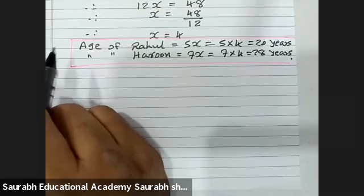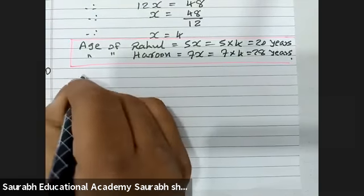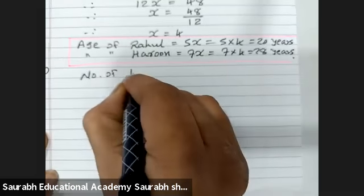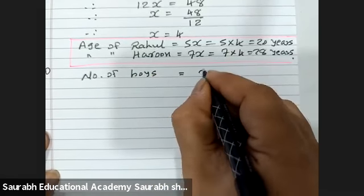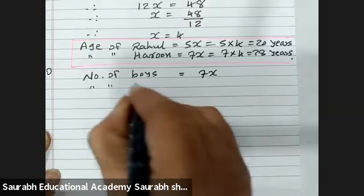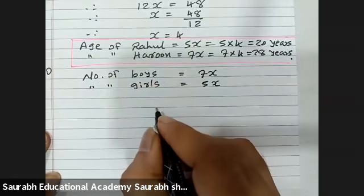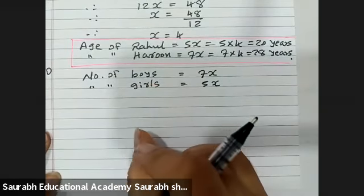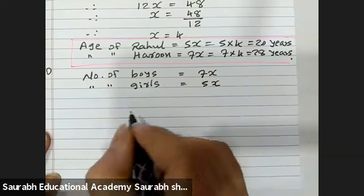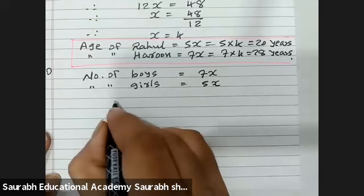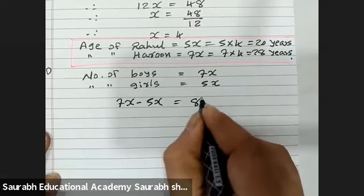Now in sum number 10, the question is: the number of boys and girls in a class are in the ratio 7 to 5. Let's assume the number of boys is 7x and the number of girls is 5x. The number of boys is 8 more than the number of girls, so we take the difference: 7x minus 5x equals 8.